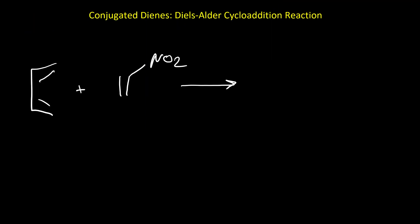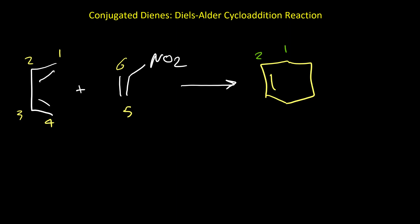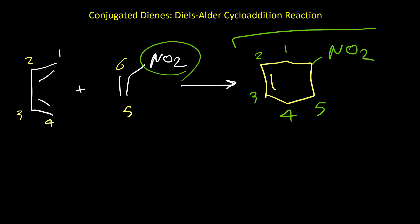Here is the first example for a Diels-Alder reaction. To make it easier, I would like to put numbers on the carbons to find the position of substituents and also the double bond in our product. The product for the Diels-Alder reaction is always a cyclohexene, with the double bond between carbon 2 and 3. On carbon 6 we have NO2, so this is our final product.